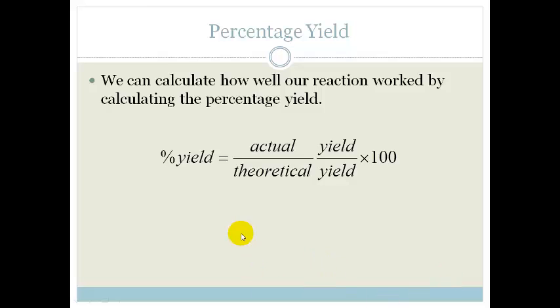We can calculate the percentage yield. So, the percentage yield is actual yield divided by theoretical yield.